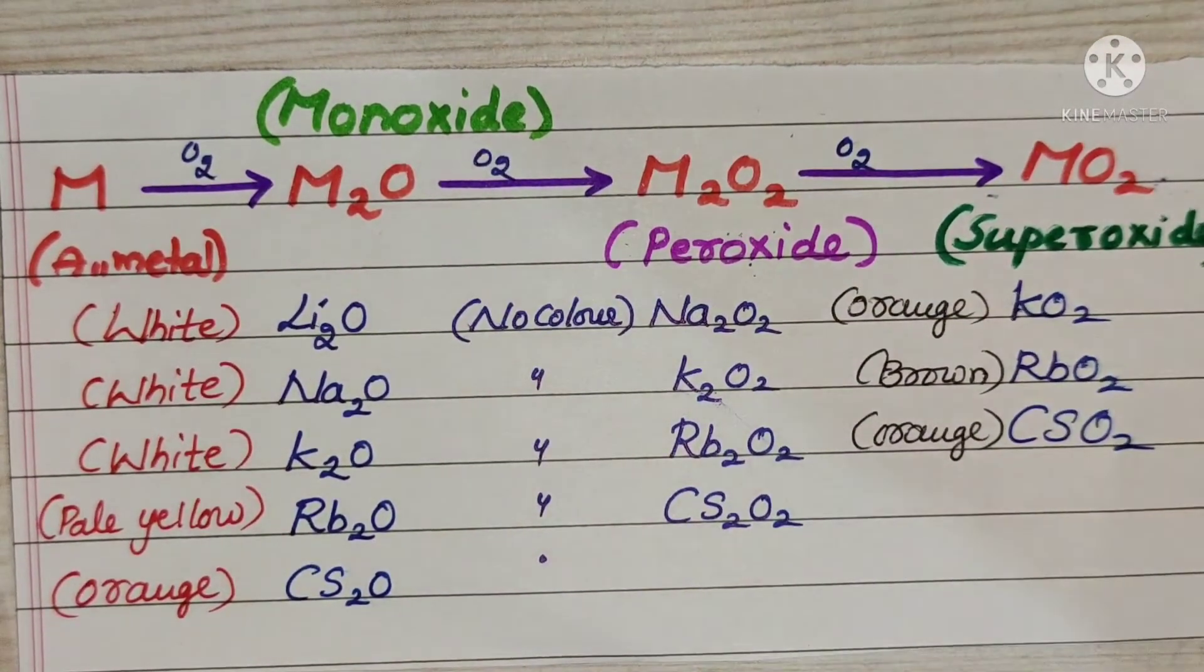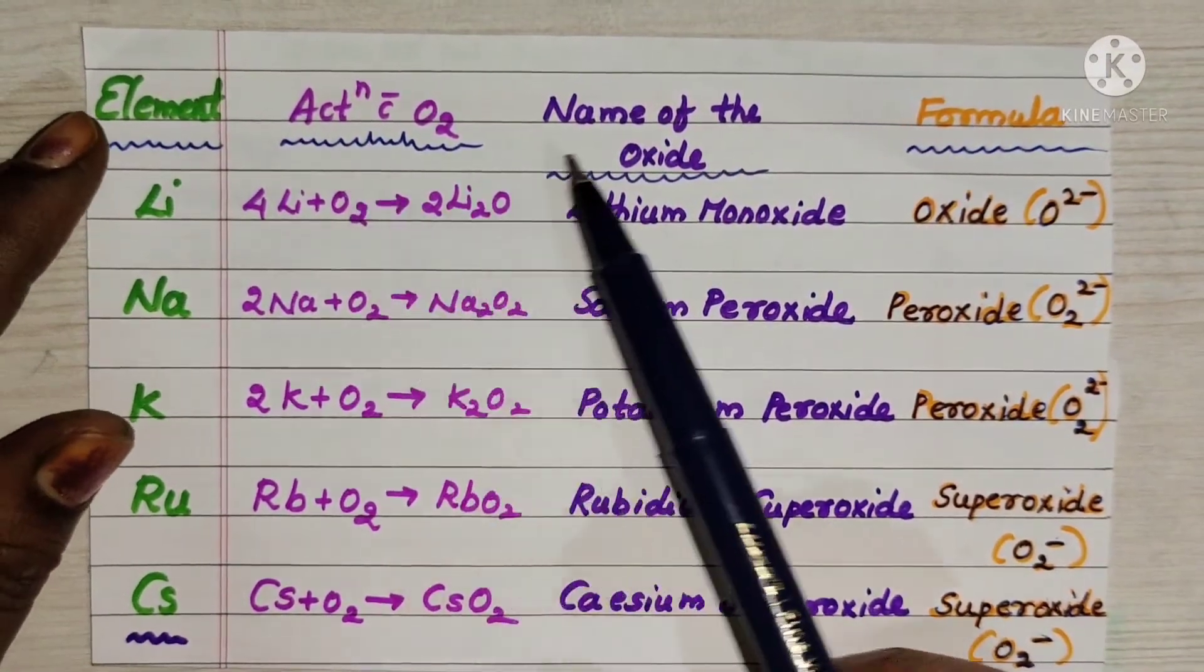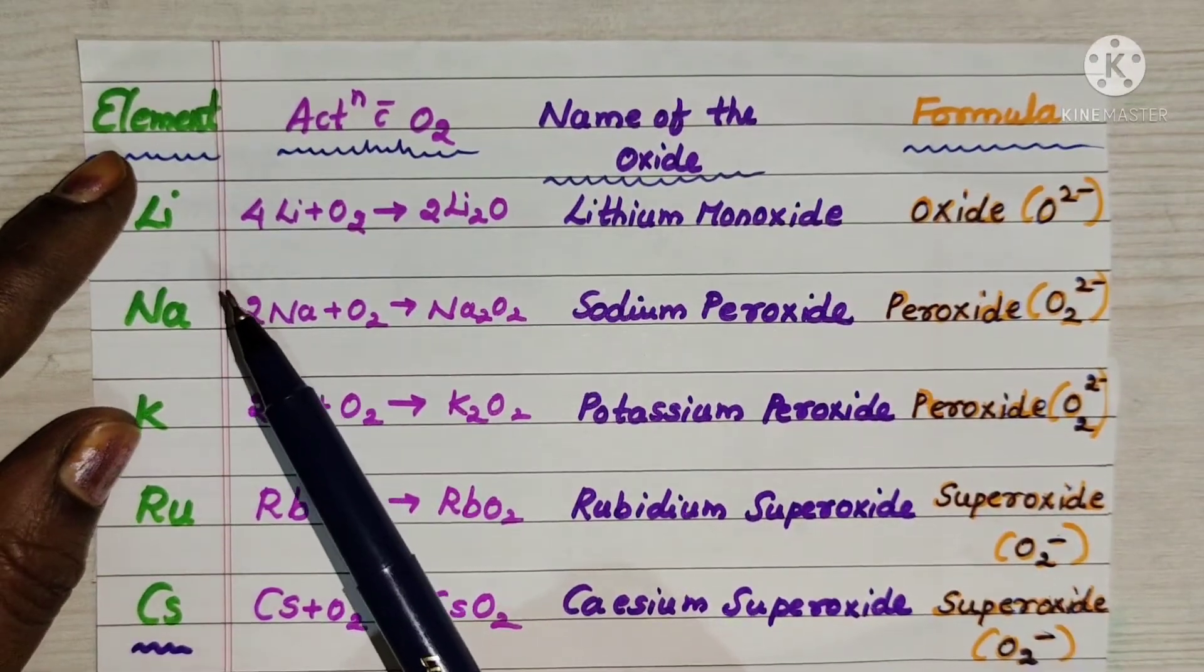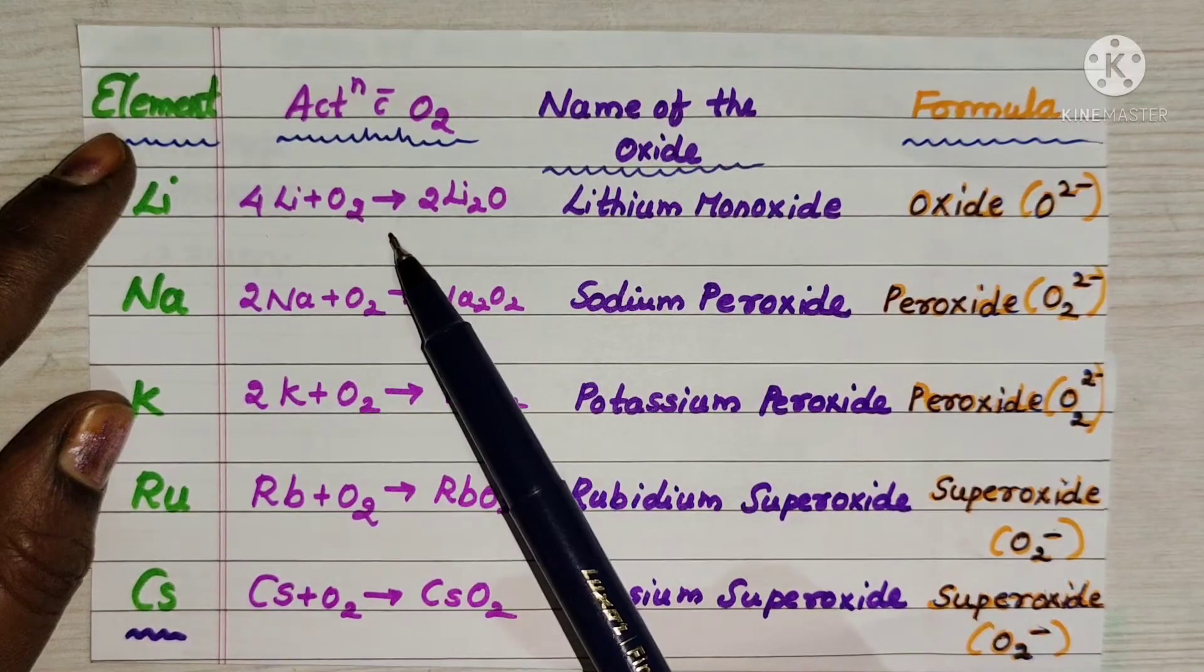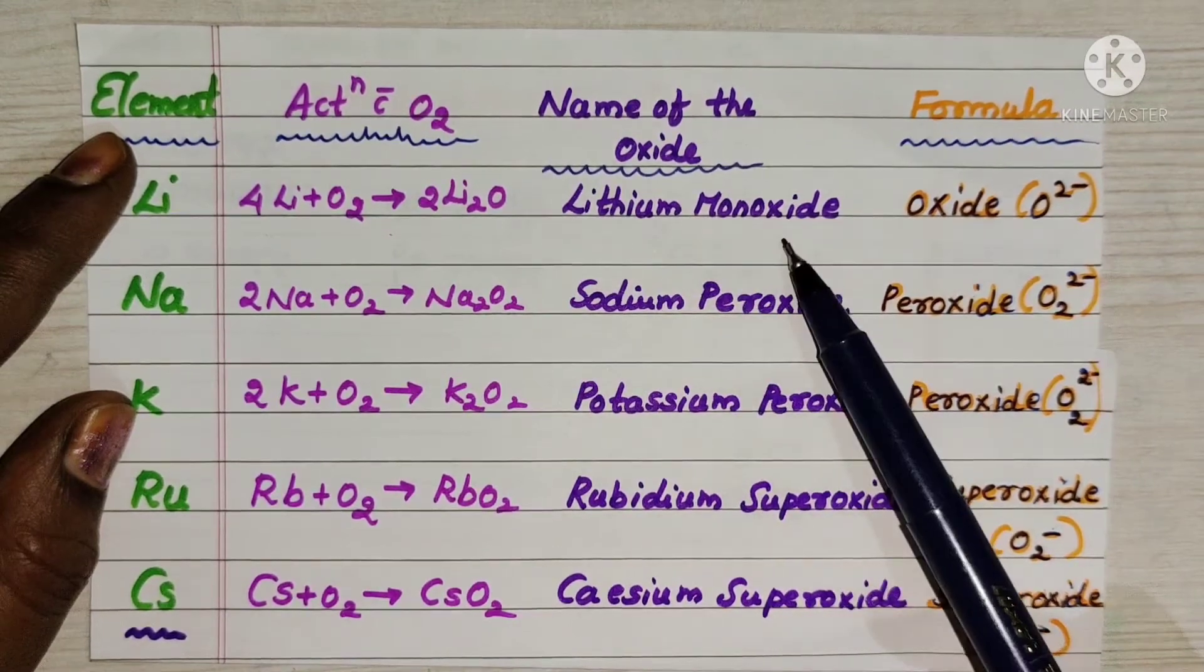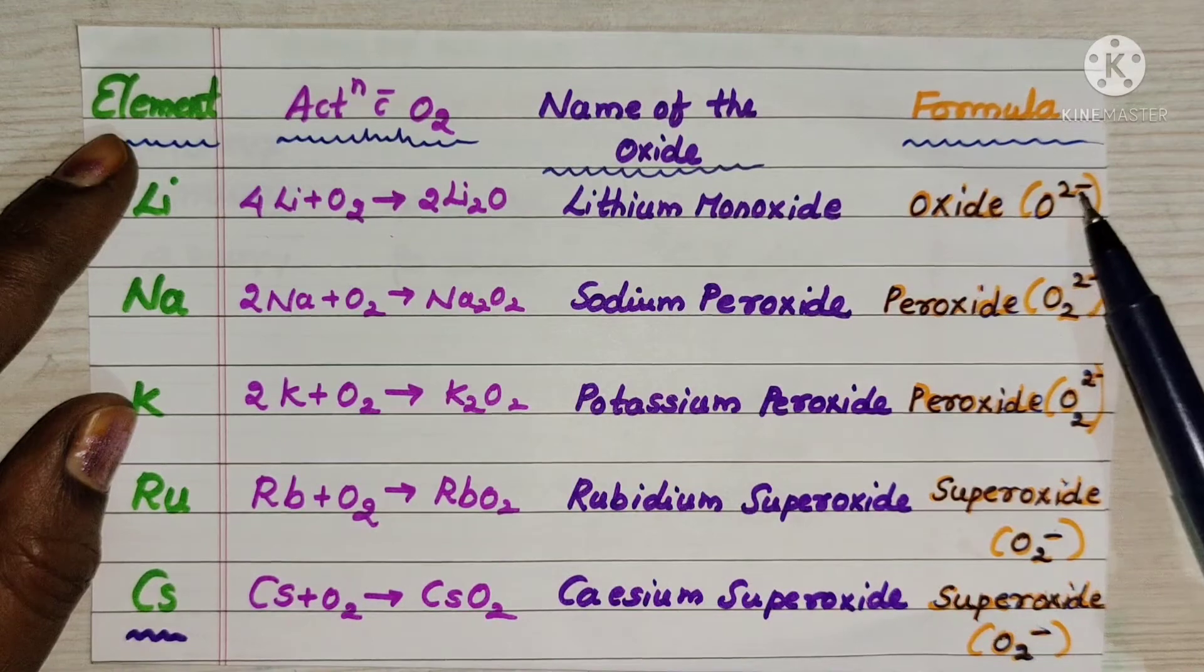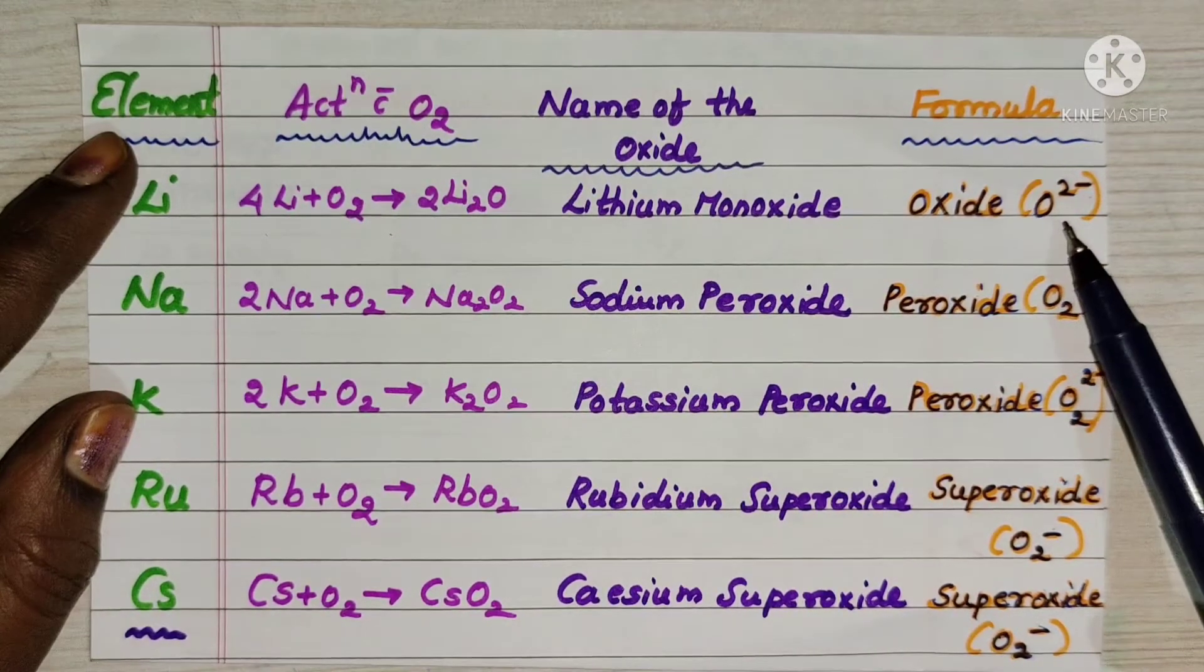See here, element reacts with oxygen to give the name of the oxide formula. Simply for understanding purpose I am explaining. Lithium when reacts with oxygen forms Li2O. It is nothing but lithium monoxide. Oxide formula is O power 2 minus. You must remember.